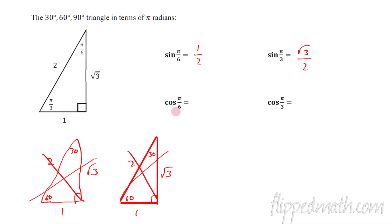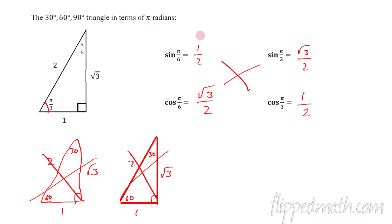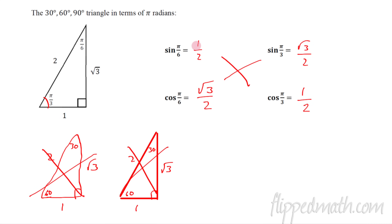You might wonder why it's called cosine. The cosine of π/6 is adjacent over hypotenuse = √3/2, and the cosine of π/3 is adjacent over hypotenuse = 1/2. Notice that sine and cosine values for π/6 and π/3 swap: sine of π/6 = cosine of π/3 = 1/2, and sine of π/3 = cosine of π/6 = √3/2. Memorize one and you can figure out the other.